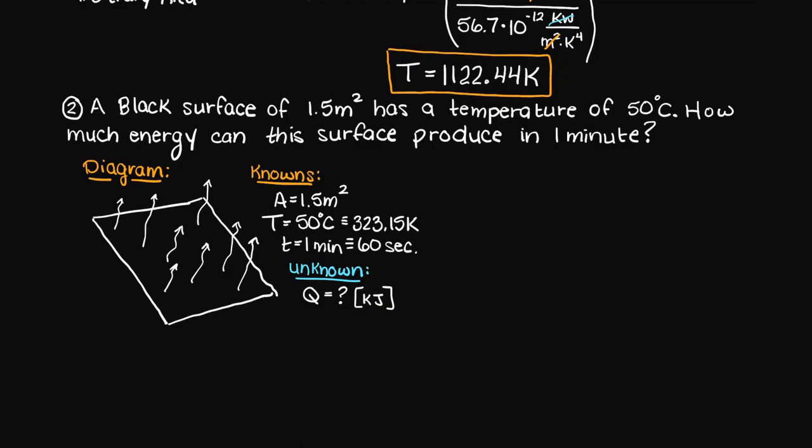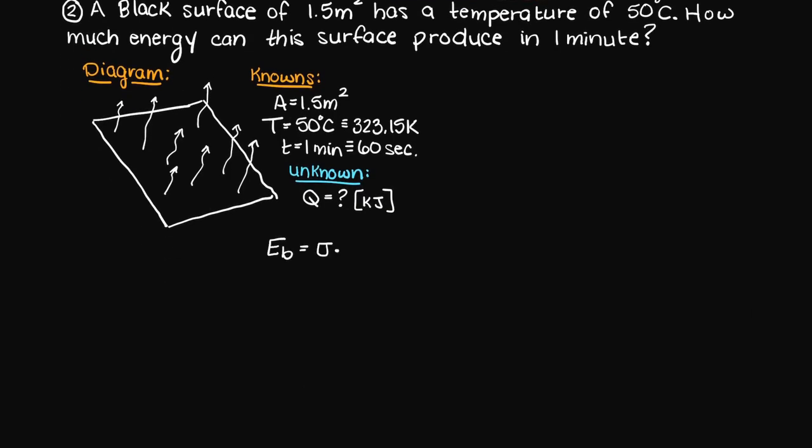So let's first write the Stefan-Boltzmann's law and expand on the emissivity power portion term like we talked about in the previous video. So, here we have the change in energy over the change in time times the area is equivalent to our emissive power of the black body surface.